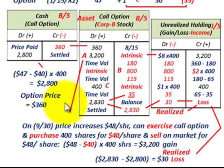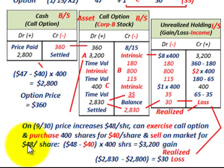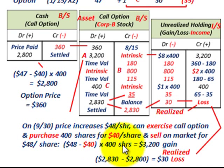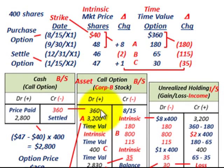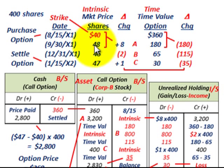Let's look at what that $3,200 actually means. On 9/30, the price increased to $48 per share, so you can exercise the call option and purchase 400 shares at $40 per share, then sell the stock at the market price of $48 per share. Taking $48 minus $40 gives a difference of $8 per share times 400 shares, which equals a $3,200 gain. This increases our call option because our market price increased by $8 per share, and we recognize that as an unrealized holding gain on our income statement.